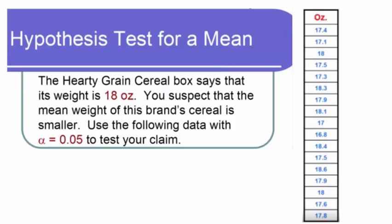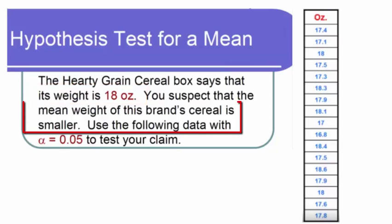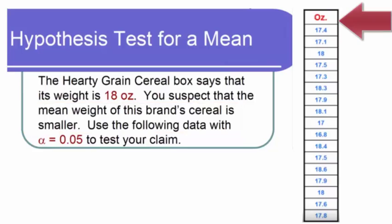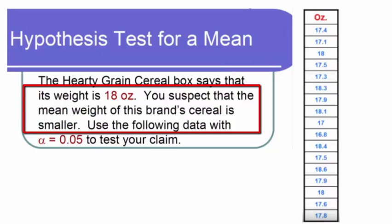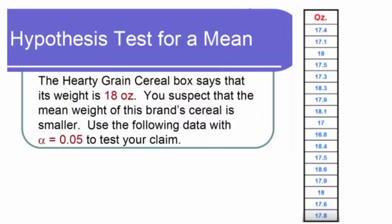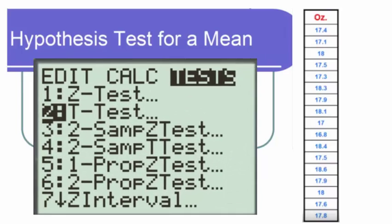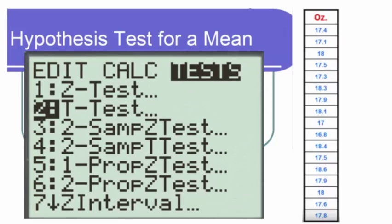Here we have a hypothesis test for a mean that's very similar to a hypothesis test you might consider in everyday life. In this problem, you see on a cereal box by Hardigrain that the weight says 18 ounces. However, you suspect that the average weight of this brand's cereal is smaller than 18 ounces. You're asked to use the following data with an alpha significance level equal to 5% to test your claim. We're going to perform a hypothesis test for a mean using a t-test.